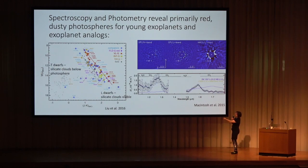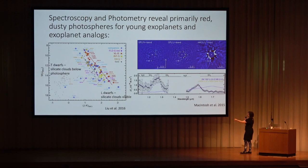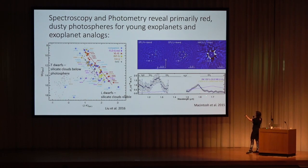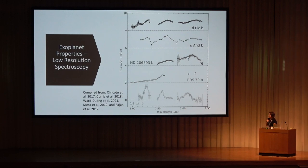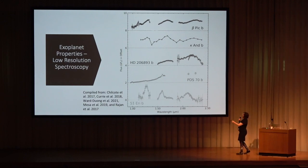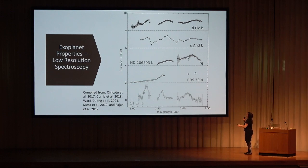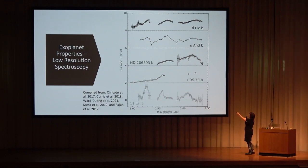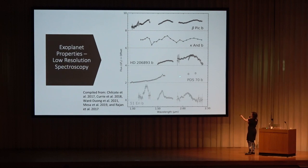Young planets look like an extension of the L dwarfs — they have thick dusty clouds — all except 51 Eri b, our one T-dwarf planet, as visible from its methane absorption feature in its spectrum. It's the coolest planet we've imaged to date as a companion. We don't just have photometry; we have low-resolution spectroscopy for many of these planets, ranging from an early L-type to 51 Eri b. The triangular H-band shape seen in some L dwarfs is a sign of low surface gravity, while the one protoplanet shown has a completely different-looking spectrum compared to the more mature planets.